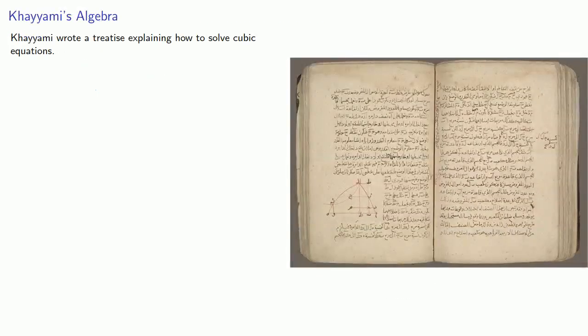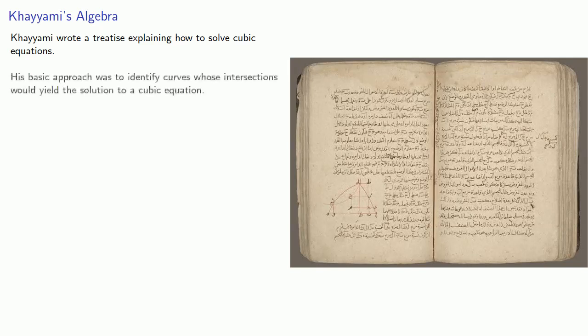Khayyami wrote a treatise explaining how to solve cubic equations. His basic approach was to identify curves whose intersections would yield the solution to a cubic equation. His basic tool is the theory of proportionals.